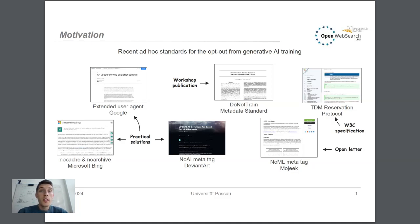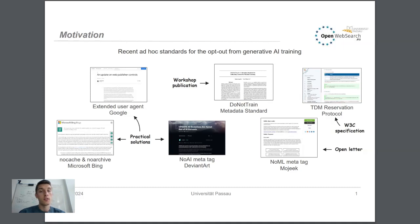These were new means of exercising web content control in response to the changed situation in which a lot of web data was used as training data for the development of generative AI applications, which was not going along with the content creators and publishers who wanted to protect their creative work on the internet.